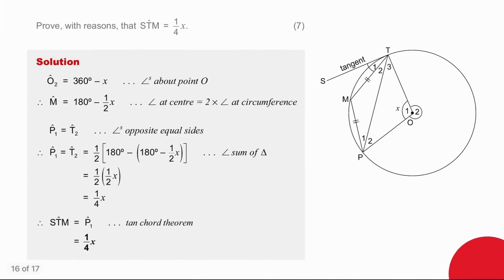So writing it up from the beginning, we start from the starting point. Angle O2 is 360 minus x. Angles around a point, so that's the angle we found here. Then we went to angle M and found the little angle inside. It is 180 minus a half x. Angle at center equals twice angle at circumference. We explain angles opposite equal sides.